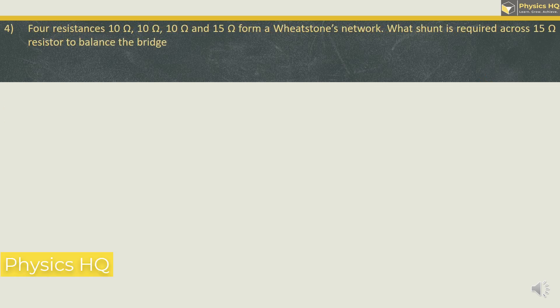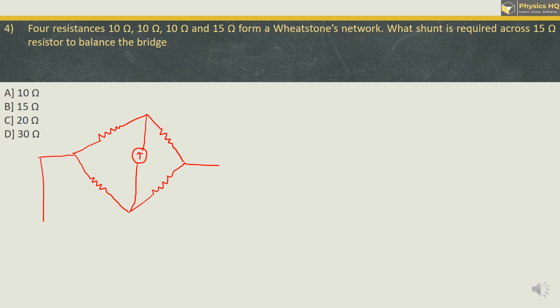Let us check out the next MCQ. 4 resistances 10 Ohm, 10 Ohm, 10 Ohm and 15 Ohm form a Wheatstone's network. What shunt is required across 15 Ohm resistance to balance the bridge? The options are 10, 15, 20 or 30 Ohm. Let us first talk about what is a Wheatstone's network. So when you have 4 resistances connected in this fashion, and over here we have a galvanometer connected, and this entire thing is connected to a power supply.